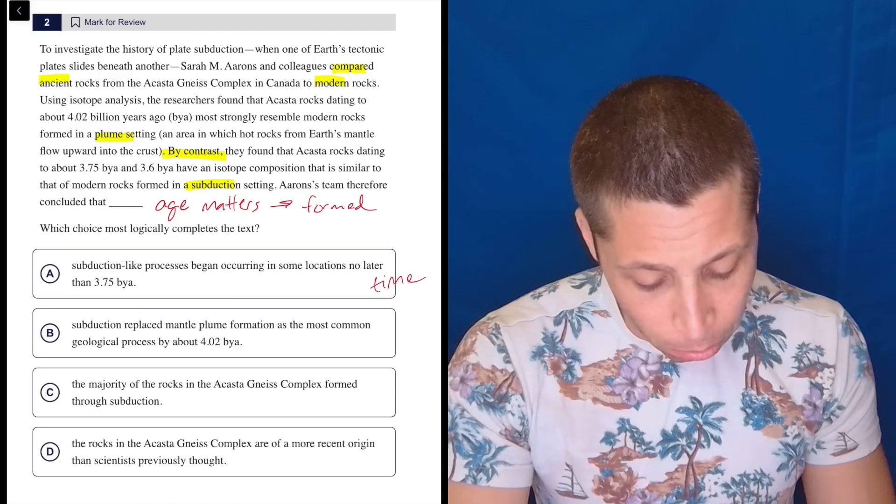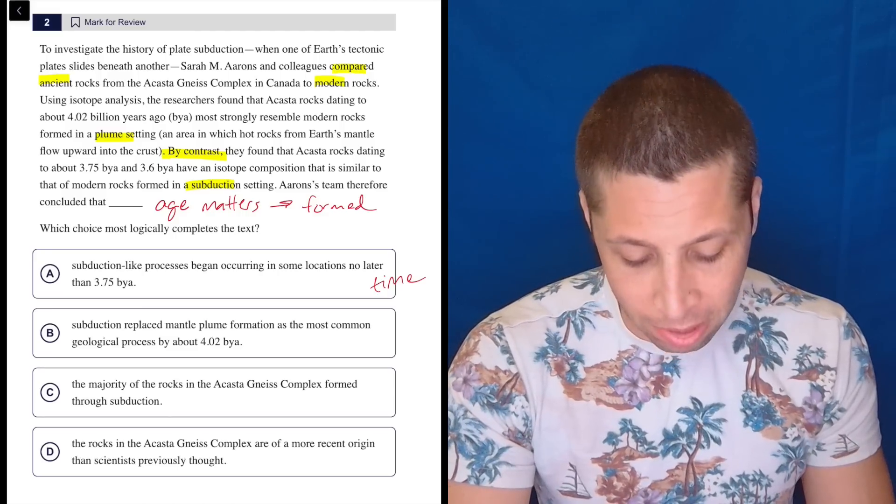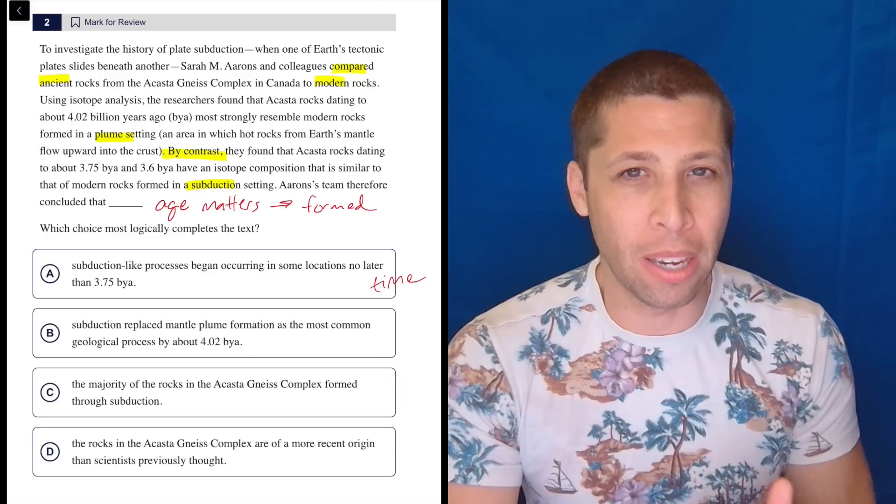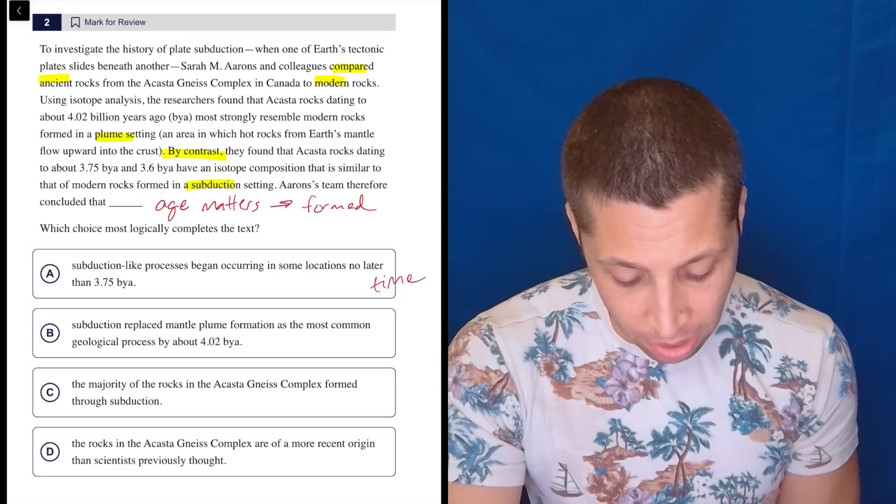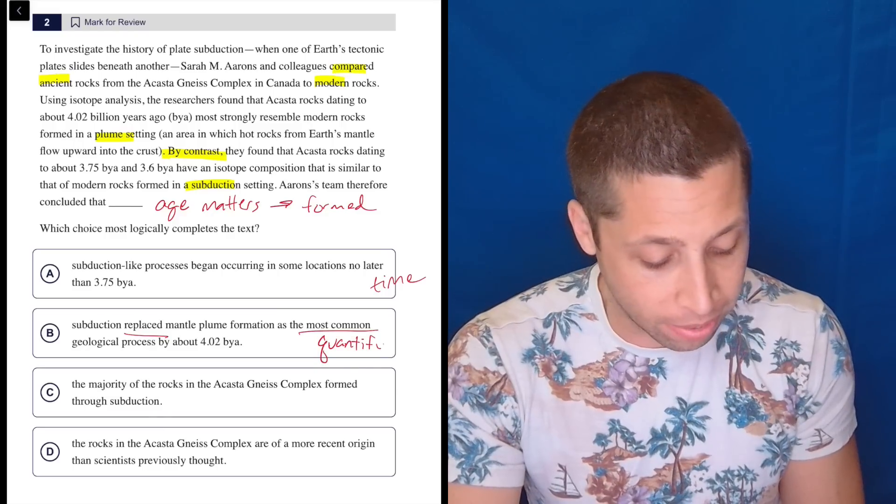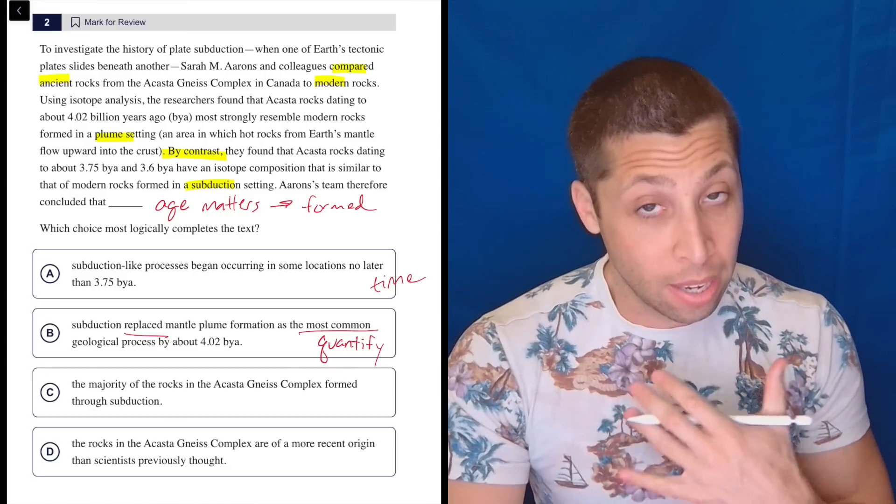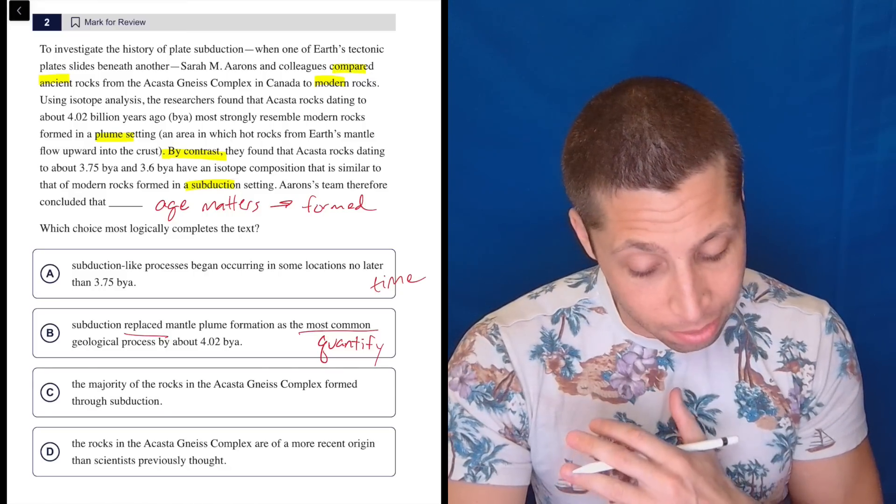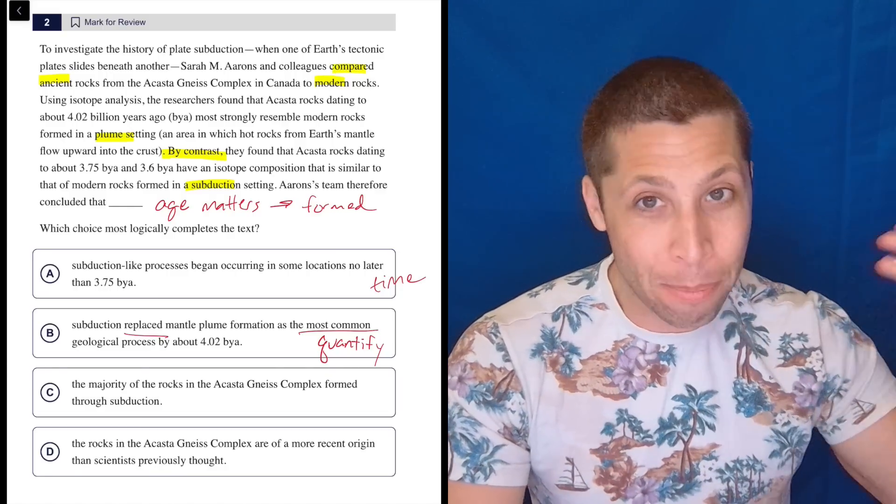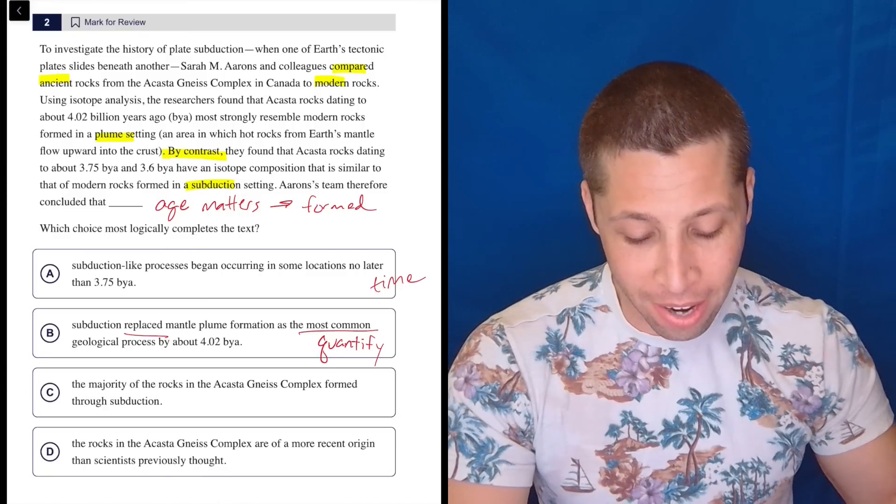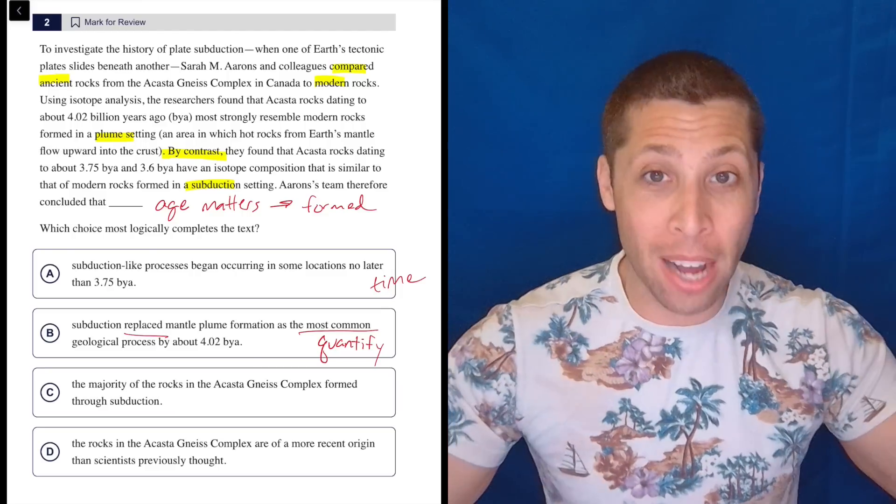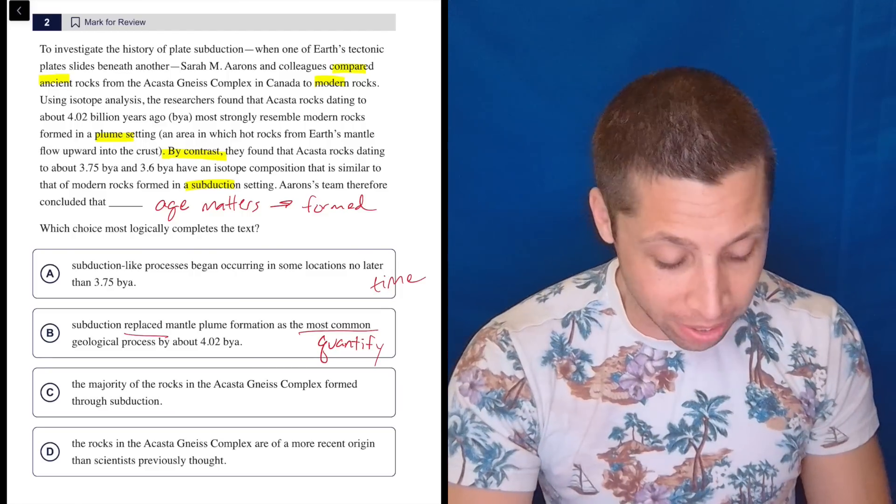Subduction replaced mantle plume formation as the most common geological process by about 4.02 billion years ago. So you can hear me as I'm talking, there's just certain words that instantly stand out to me as being kind of problematic, strong words. Replaced, most common. This one's definitely a quantifier. We've seen this in many cases on SAT reading passages. Is it the most common? It says, you know, they found some rocks that are a certain age, and then they can ascribe to those rocks a certain type of formation. But are we really counting them up and saying, okay, we looked at all the rocks and the majority of them are this, and then there's this minority that are this other thing.